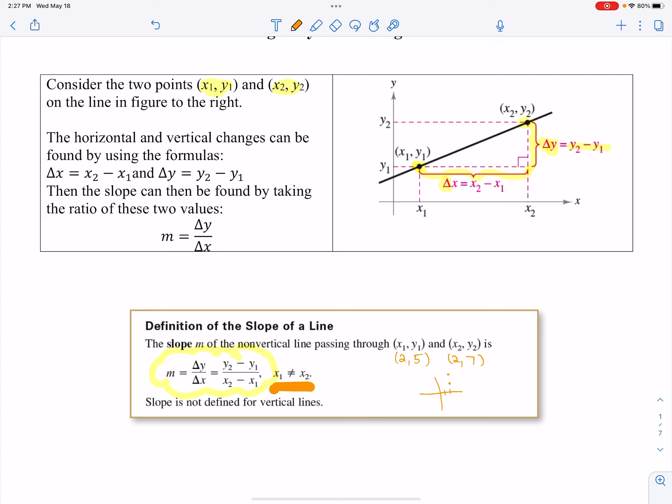That's going to give you a vertical line. And if X₁ and X₂ are the same, that means this quantity down here when you subtract them will be zero. And you know, you cannot have zero in the denominator that is undefined. So the slope of a vertical line is not defined.